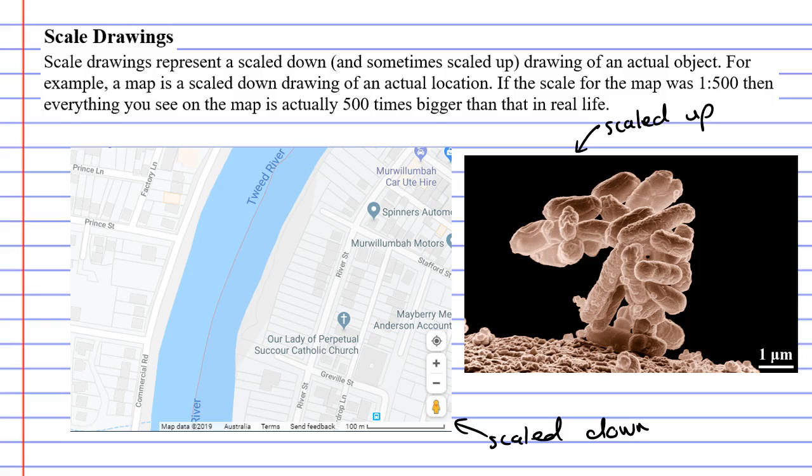Now when you look at scale drawings they will usually give you a scale. For example they might give you the scale of 1 to 500. Let's say that this map has a scale of 1 to 500. What that actually tells you is that everything you see on the map is 500 times bigger than that in real life.